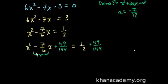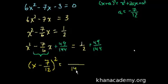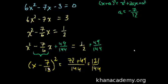Now how can I simplify the left-hand side? We now know it is a perfect square. We know a is minus 7/12, so the left-hand side is x minus 7/12, all squared. That equals, with a common denominator of 144: 72 plus 49, which is 121. So we have x minus 7/12 squared equals 121 over 144.